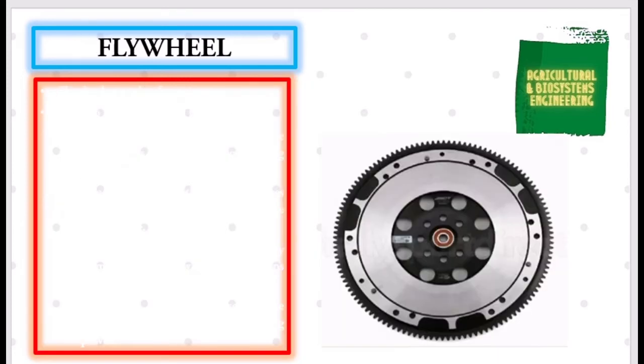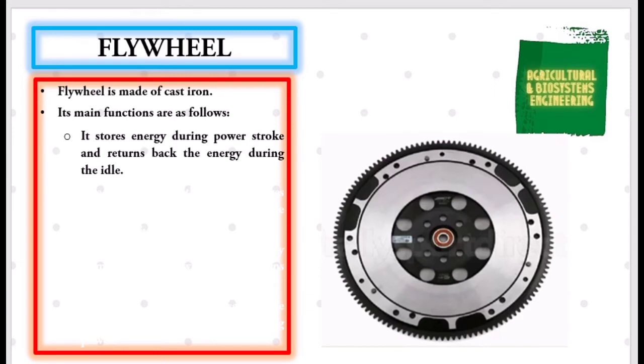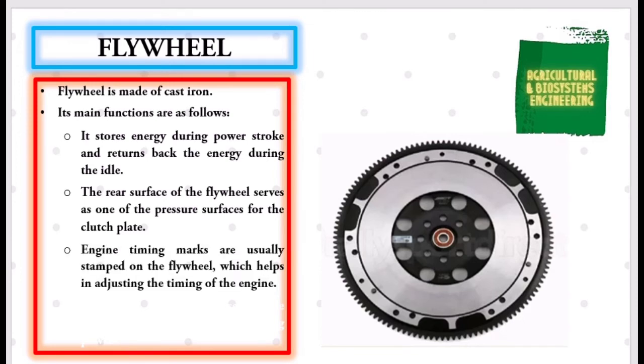Next, our flywheel. Flywheel is made of cast iron. Its main functions are as follows: it stores energy during power stroke and returns back the energy during the idle; the rear surface of the flywheel serves as one of the pressure surfaces for the clutch plate; engine timing marks are usually stamped on the flywheel which helps in adjusting the timing of the engine; sometimes the flywheel serves the purpose of a pulley for transmitting power.